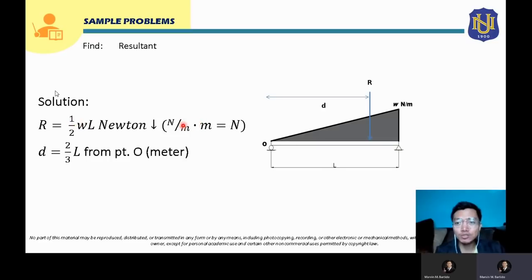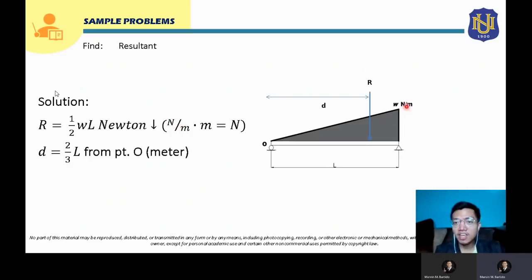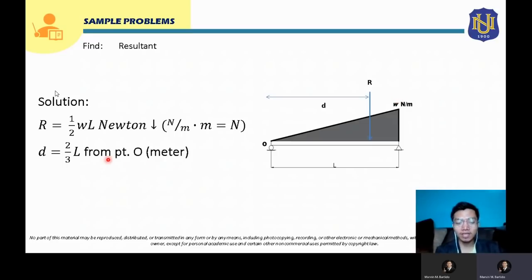The equivalent point load R = ½ × W × L (area of the triangle), with units: W in N/m times L in meters gives Newtons. The direction is downward. For all distributed loads, the unit must be force per length (N/m, lb/in, lb/ft, kip/ft). For point loads the unit is simply force (N, lb, kip).